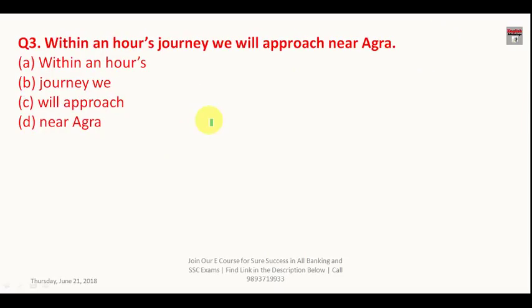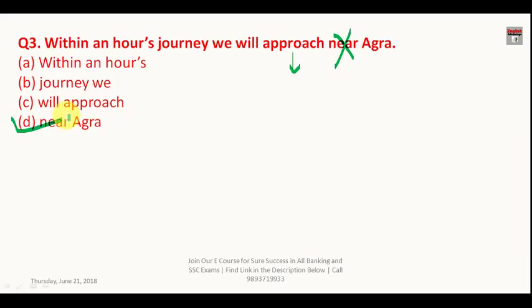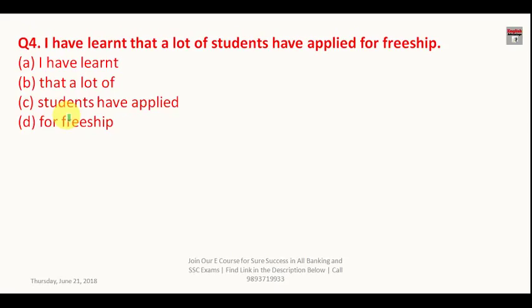Question number three: 'Within an hour's journey we will approach near Agra.' This is a typical SSC sentence. 'Approach' means 'come near,' so the word 'near' is redundant. You should say either 'we will approach Agra' or 'we will come near Agra.' The answer is D.